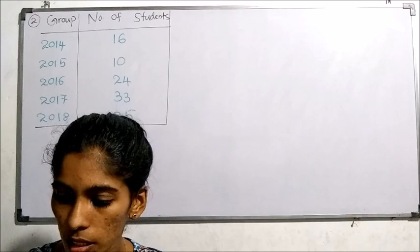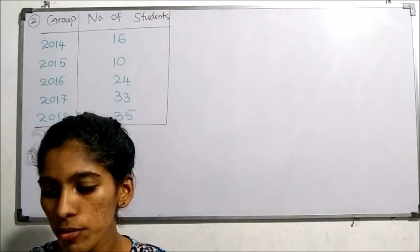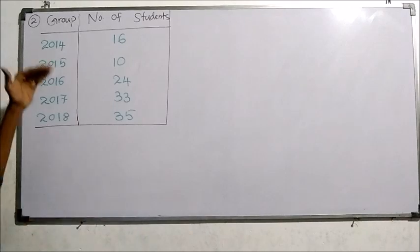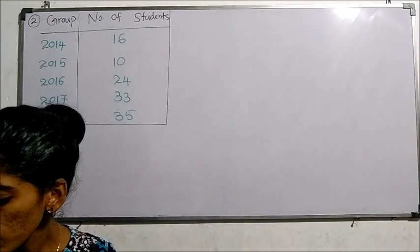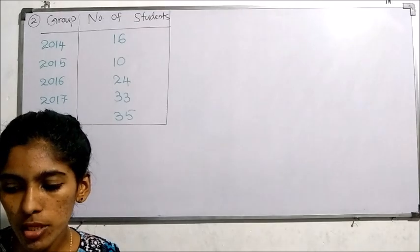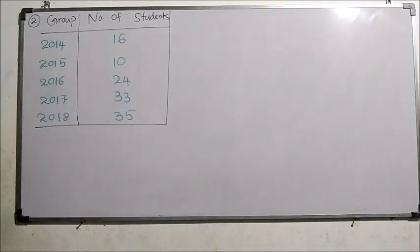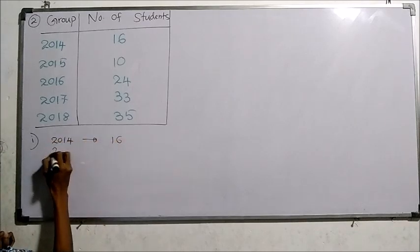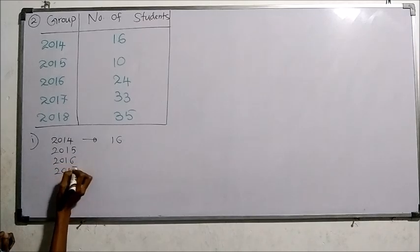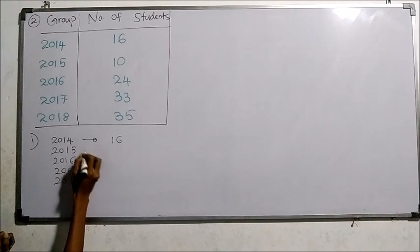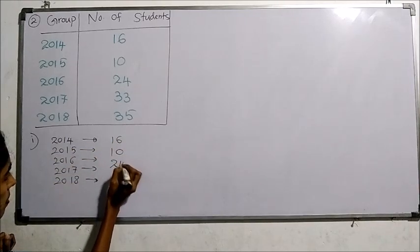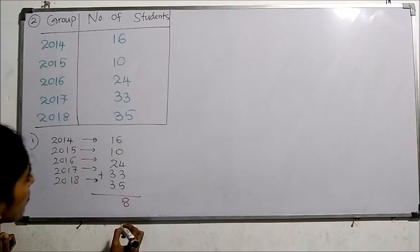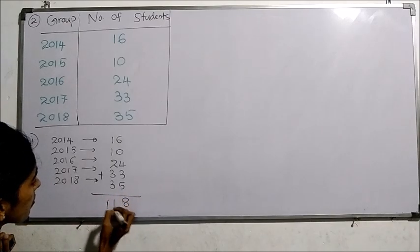In the second example, the table represents the number of students in a certain school who passed the grade 5 scholarship examination during the last 5 years. Question 1 is: find the total number of students who passed the exam during the given 5 years. That means you need to simply add. If you want, you can write along with the year. When you add all, 118 students.